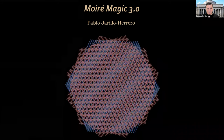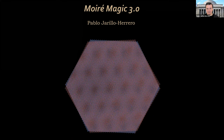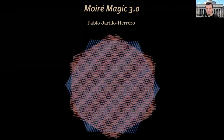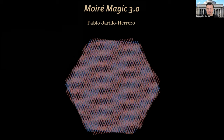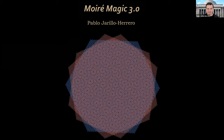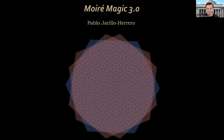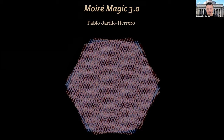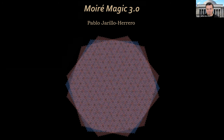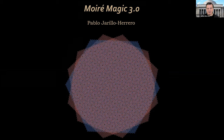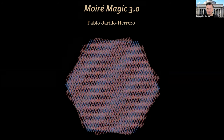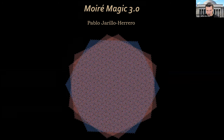I want to tell you about some quite recent work. I chose the title 'Moiré Magic 3.0' — it's been about three years since we discovered superconductivity and correlated insulator states in magic angle graphene. But the 3.0 has more to do with what you see on the screen: the fact that we keep adding layers to our moiré systems and finding more magic.